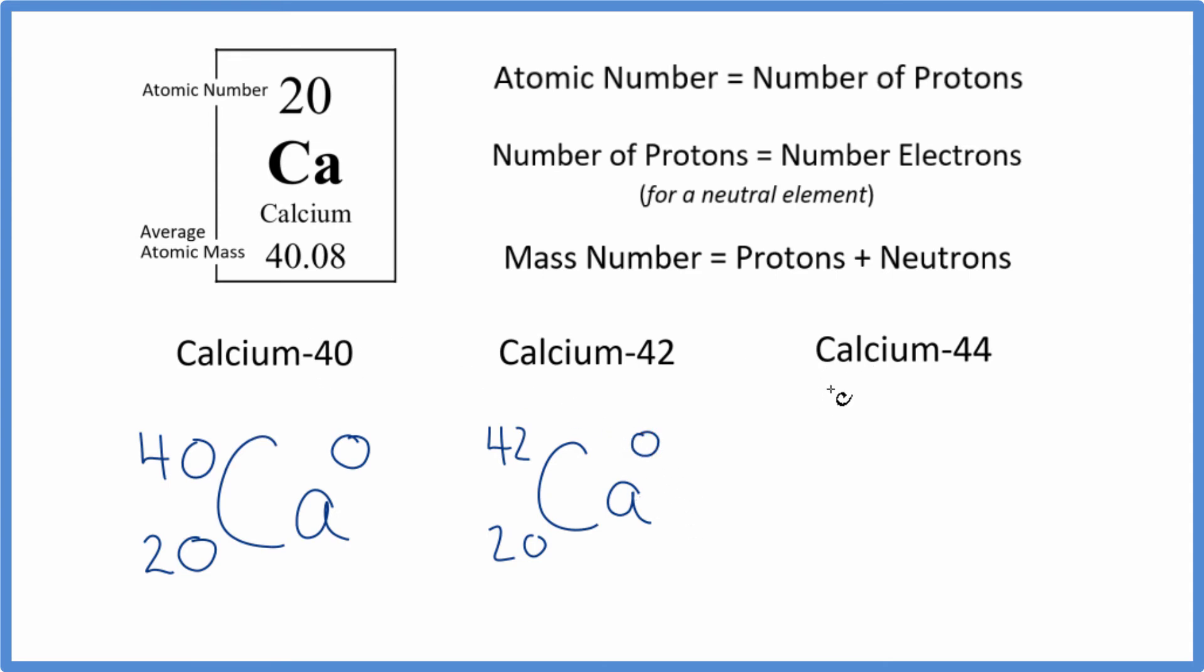Pause and write the isotope or nuclear notation for calcium-44. So we write the element symbol calcium. We know 44 is going to be the mass number right here. It's calcium. It has to be 20. And then it's neutral. So we'll put a zero here.